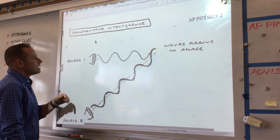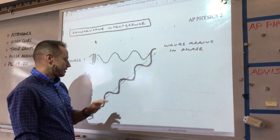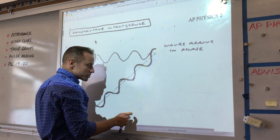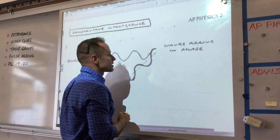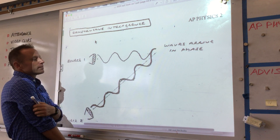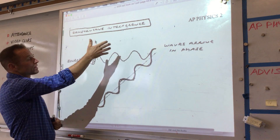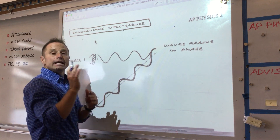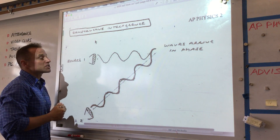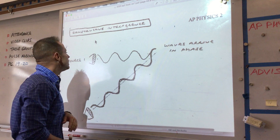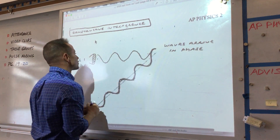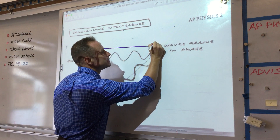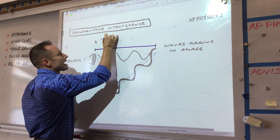We're looking at interference between two wave sources. Here's one wave source and another wave source. I've picked a particular location in space — I could have picked other places — and what we're trying to understand is why at a certain place you would have loud sound or quiet sound. The key thing to look at is something called the path difference. We look at the first wave source, and here is what's called path one — this distance.